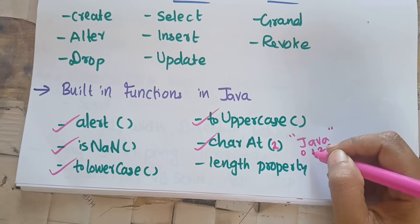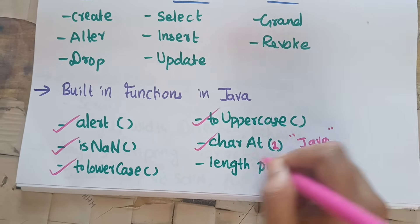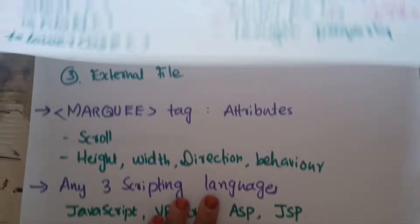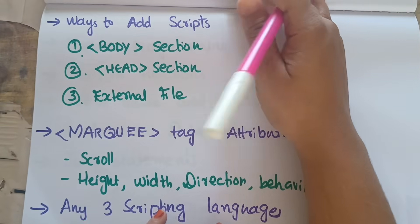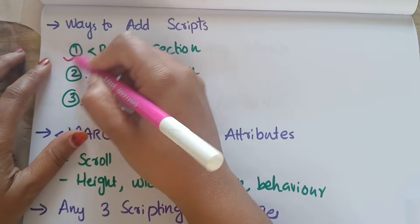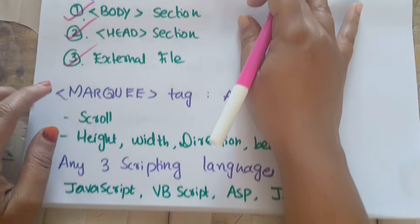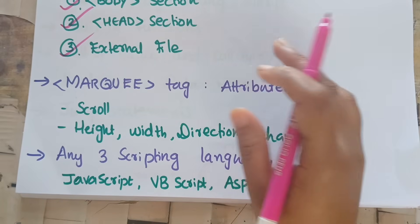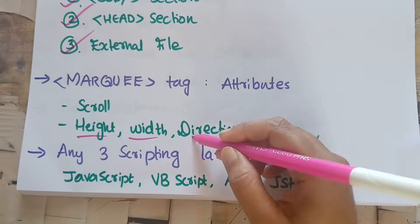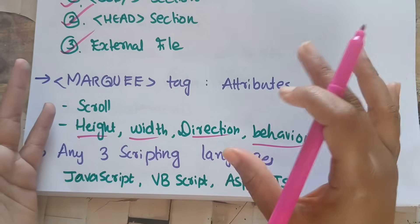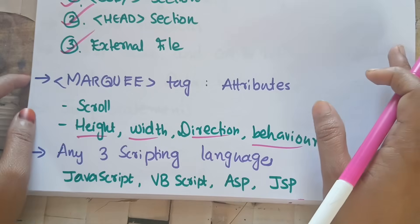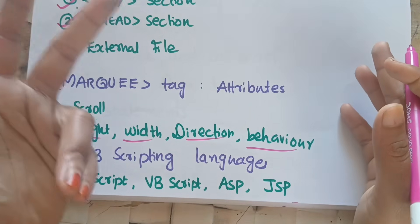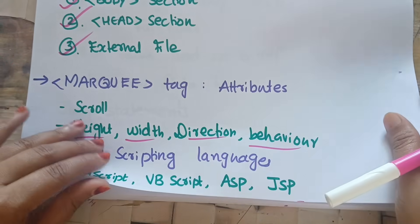The length property is used for string length. How to add script in webpages: you can add script inside the body tag, head tag, or as an external file. The marquee tag is used for scrolling; its attributes include height, width, direction, and behavior. Scripting languages for web include JavaScript, VBScript, JSP.